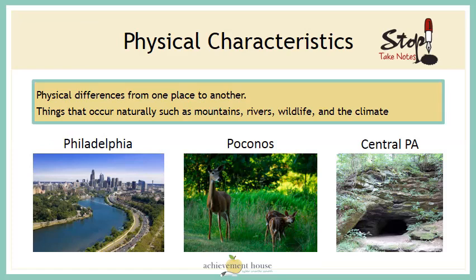A quick review: physical characteristics are the physical differences from one place to another — things that occur naturally, such as mountains, rivers, wildlife, and the climate. Remember, in our last lesson, we looked at pictures and picked out the things that occur naturally in each of those environments.